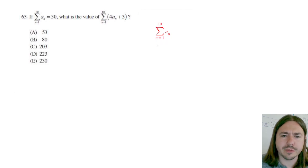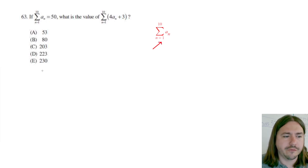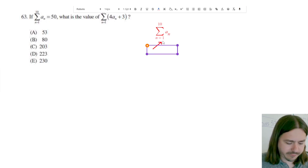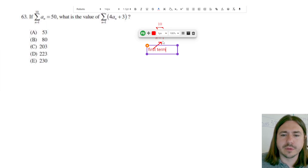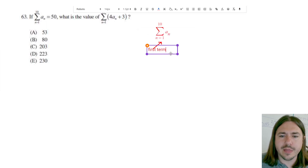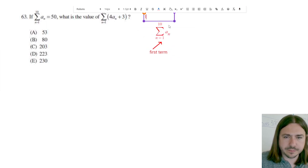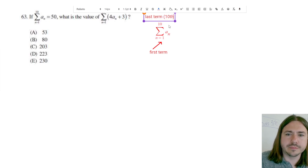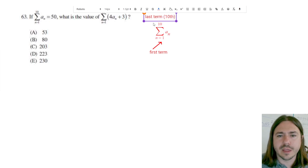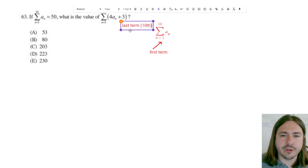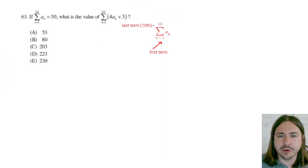So the number on the bottom that you see, that's going to be the value of the first term. This is going to be the first term. And then see the 10 on top — that's going to be the last term, the 10th term. And so we just want to add up all the terms from the first term to the 10th term.